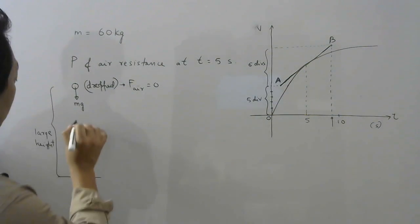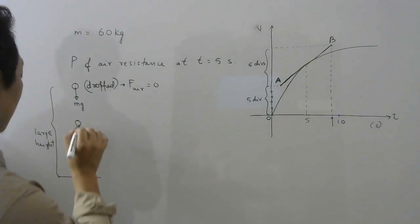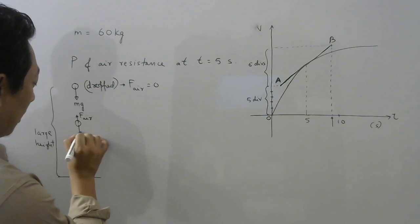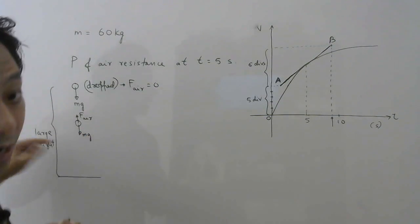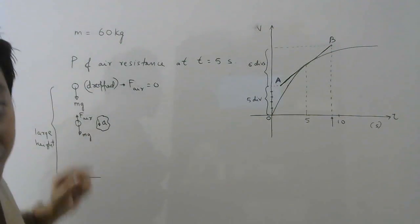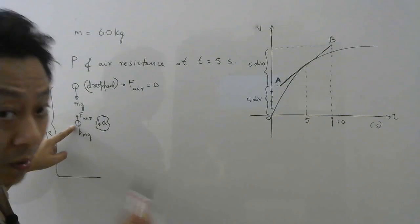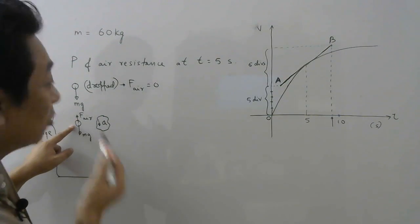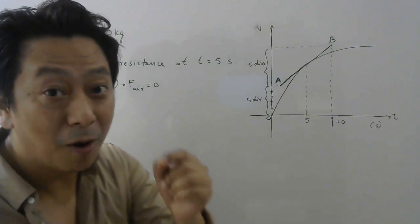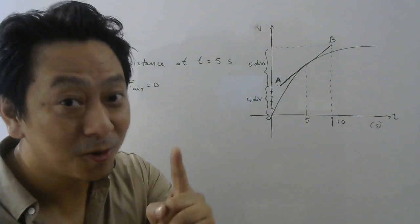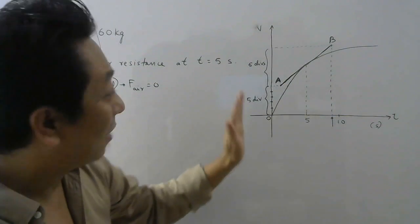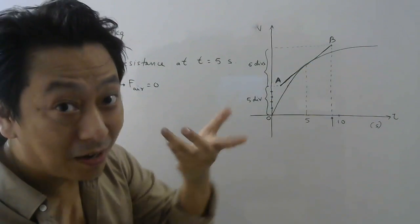But as the body moves and gains velocity, there will be some air resistance in the opposite direction along with mg. At this instant, let us say acceleration is a downwards. To calculate power I need to first find the force of air resistance. The velocity-time graph is given, and from the velocity-time graph we can find acceleration — acceleration is the slope of the VT graph — and from Newton's second law we can calculate air resistance.